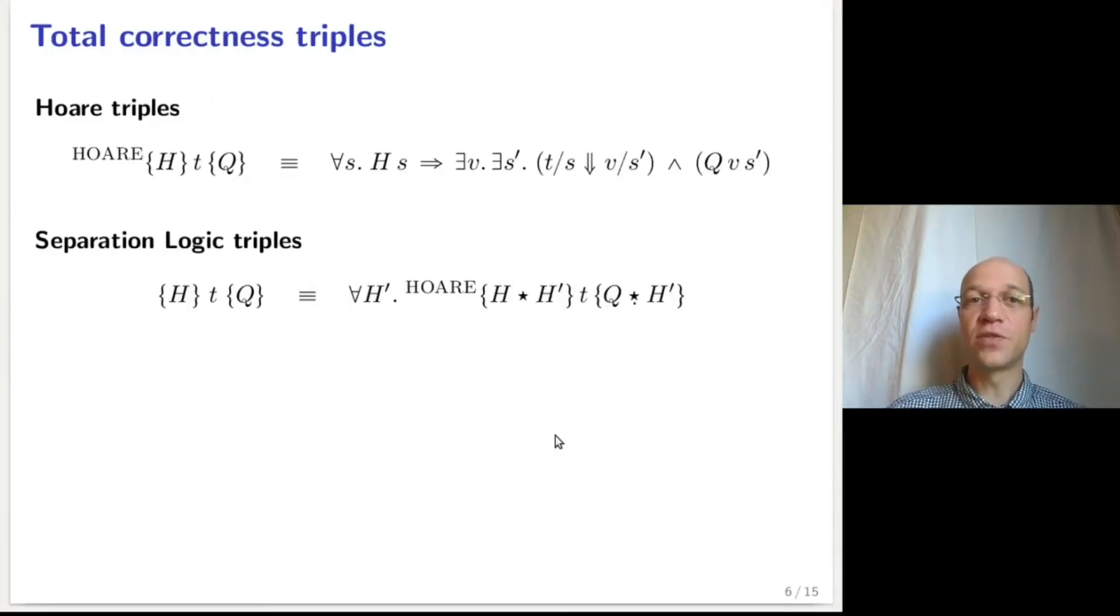Triples are defined in two stages. First, a hard triple, htq, asserts that for any state s satisfying the precondition, the term t terminates on a value v and an output state s' that, together, satisfy the post-condition q.